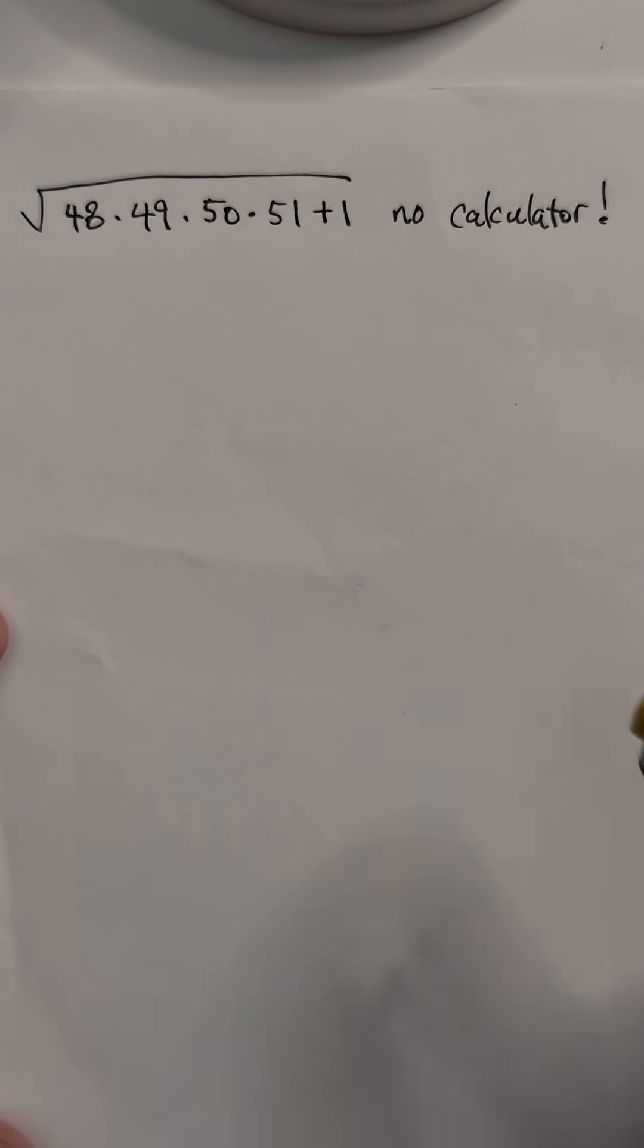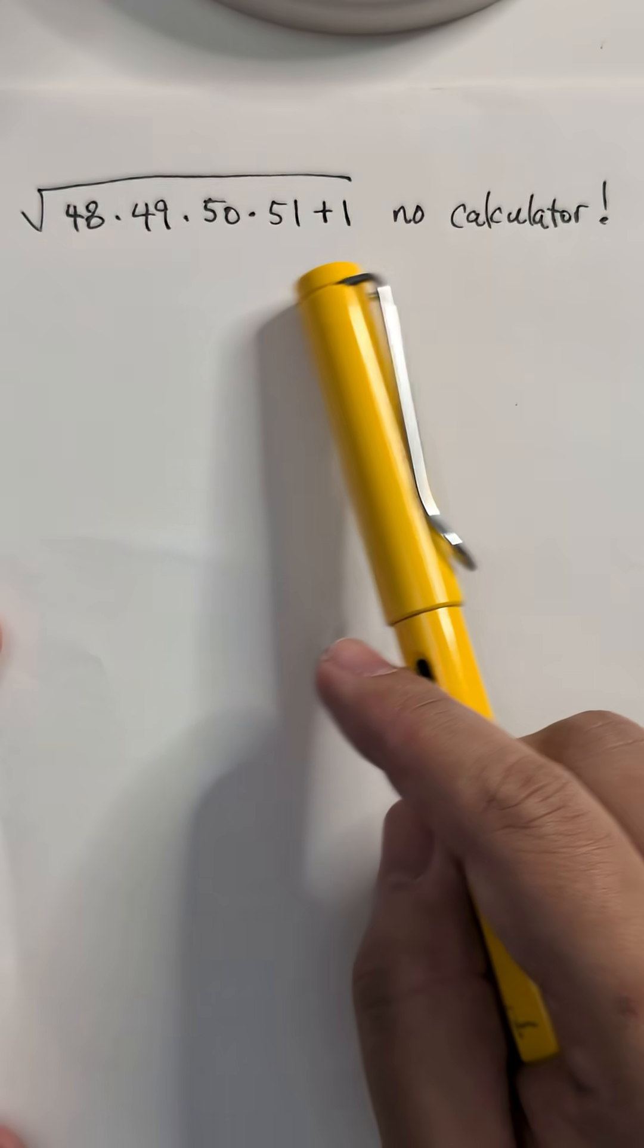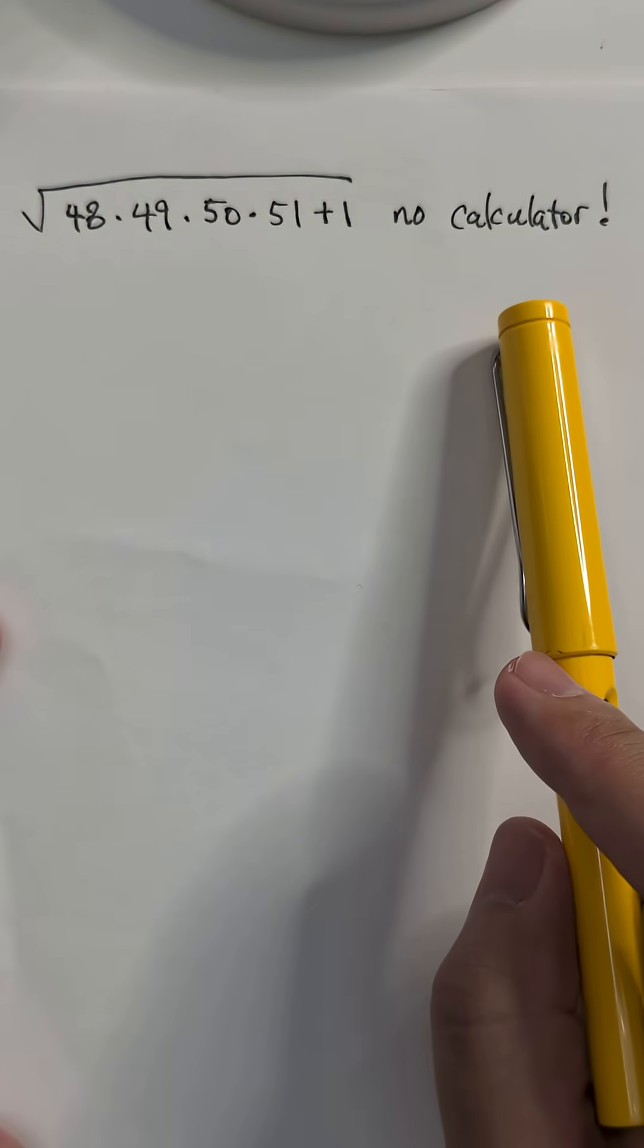Hello. Interesting problem here. We need to find the square root of 48 times 49 times 50 times 51 plus 1, all without a calculator.